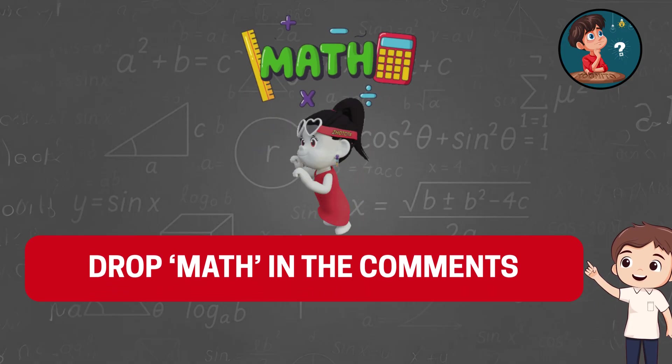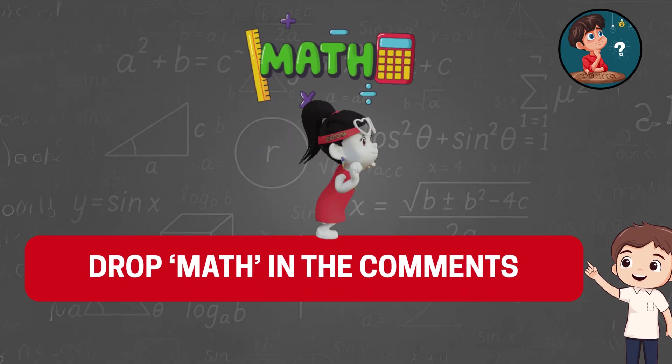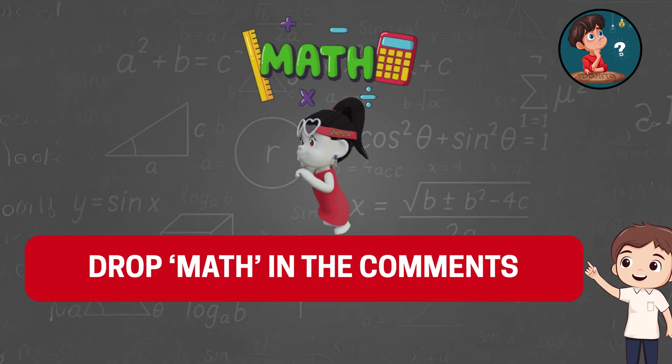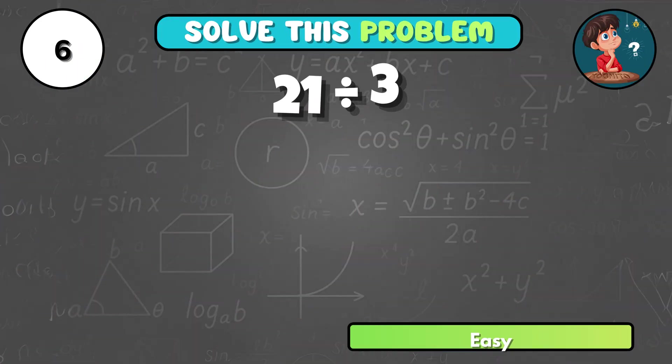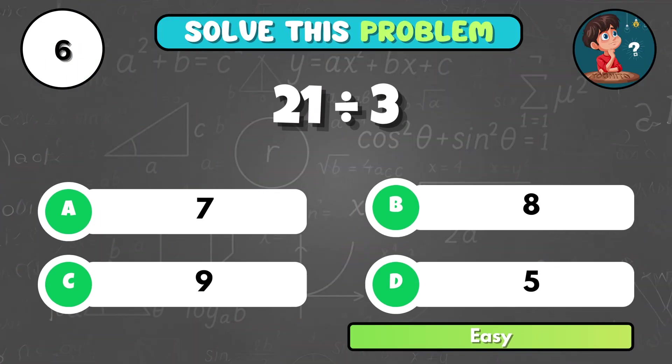If you passed the first 5 questions, make sure to drop the word math in the comments! If you share 21 equally among 3 groups, how many in each? There would be A, 7.